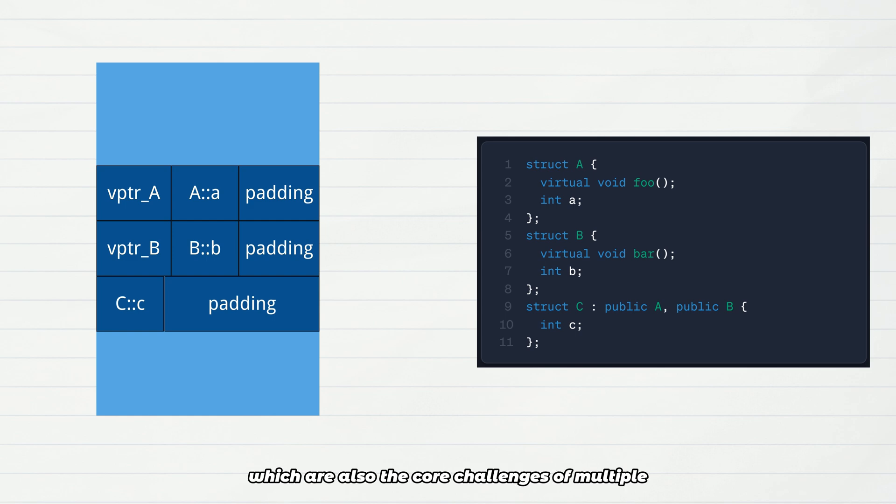First, a C object has two virtual table pointers; the vtables of A and B are independent and do not interfere with each other. Second, the base class sub-objects of A and B are arranged side by side, not nested. Third, pointers to different base classes point to different offset positions within the object.